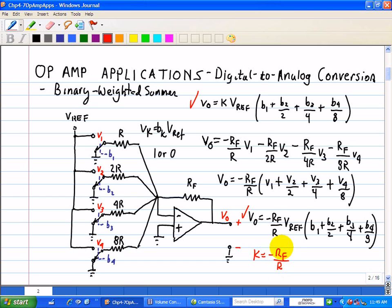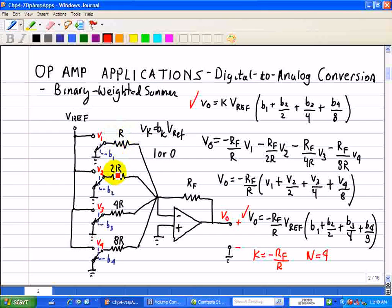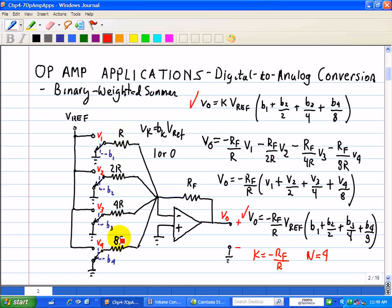Again, this is for a 4-bit binary input. Now, we can simplify this even further, if you note that if we're going to try to fabricate this circuit, we have R, 2R, 4R, 8R, and RF, five different resistor components. We'll see the next implementation will reduce the number of different resistors that we need to implement this binary weighted summer.